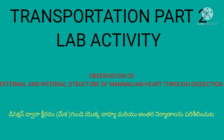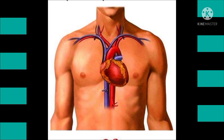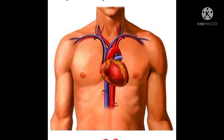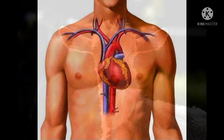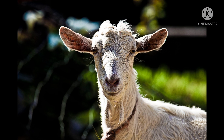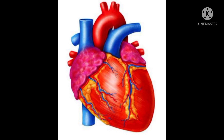Hi students, welcome to Umma Science Guru. In the previous video you learned about the structure of the heart. For this video, I collected a mammalian heart for today's lab activity — that means dissection. The structure of all mammalian hearts is similar; we take the sheep's or goat's heart for our observation. When you observe the external structure, it looks pear-shaped with a triangular outline, covered with the pericardial membrane and coronary blood vessels.